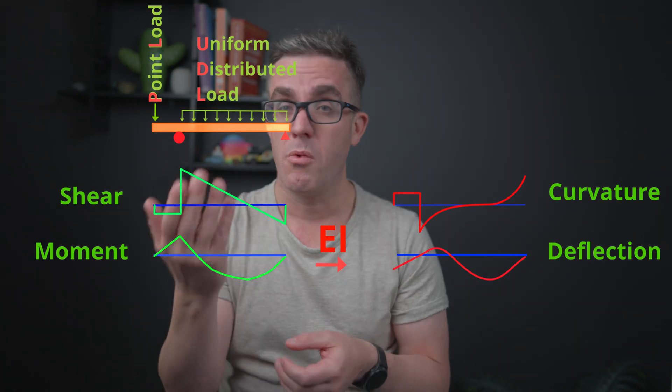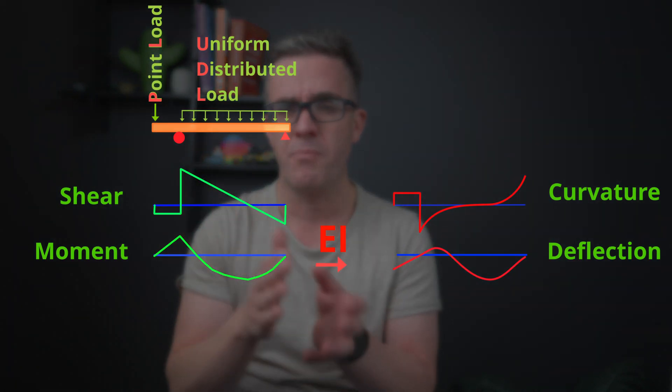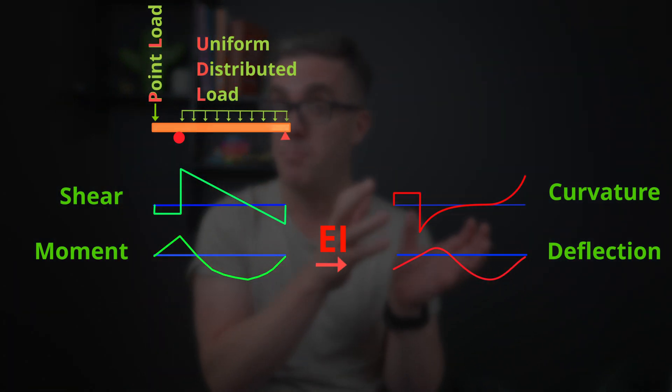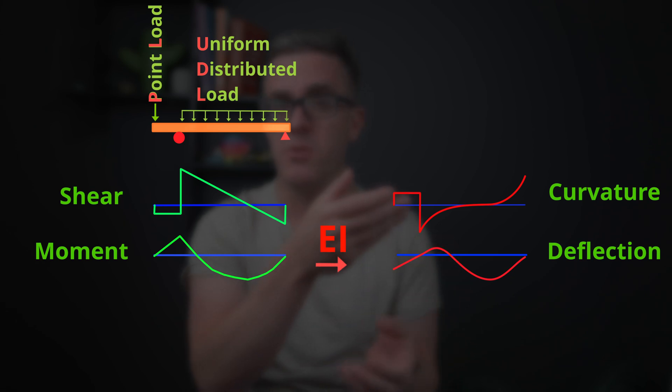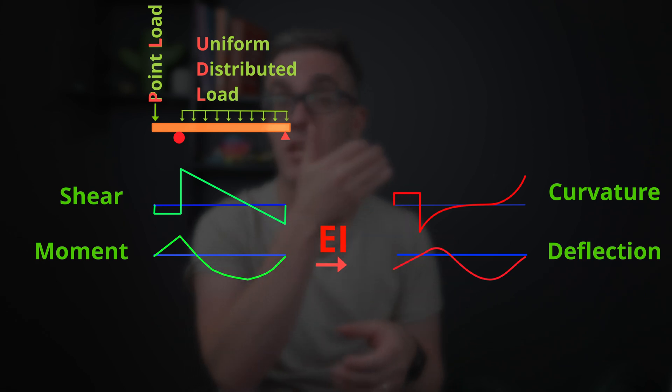We start at deflections, move up to curvature, move across to moments, and then we just integrate again to get up to shear forces, and we can integrate again to get back up to forces. So if we're going through some of these basic solutions now, we can see how we're just looking at the area under the curve or the gradient of the plots to work out whether each one is related to each other correctly. So it's an easy way to debug and see whether your results are correct.